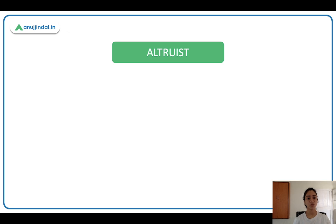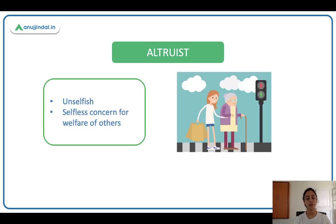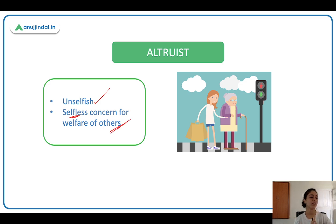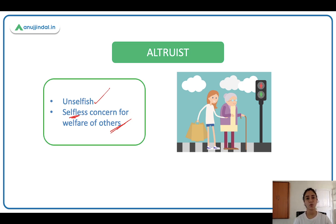Next is altruist. An altruist is someone who loves to help people, who is very unselfish, and has a selfless concern for the welfare of others. They don't expect anything in return — they will selflessly help you, saying 'I don't want anything in return, I just want to help you. Are you okay? Let me help you. Everything else can wait.' Such people are called altruists.